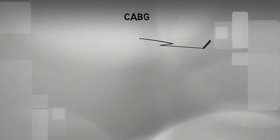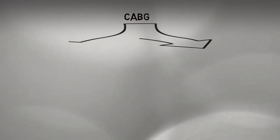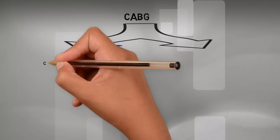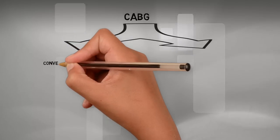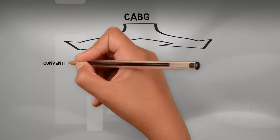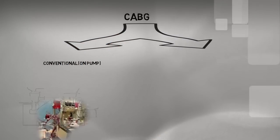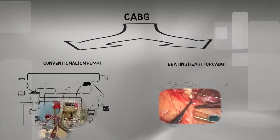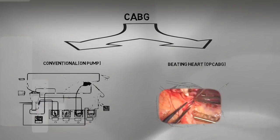Coronary artery bypass grafting is done either in a conventional way, in which the heart is stopped and a heart-lung bypass machine is used during the operation, or the bypass is done on a beating heart.